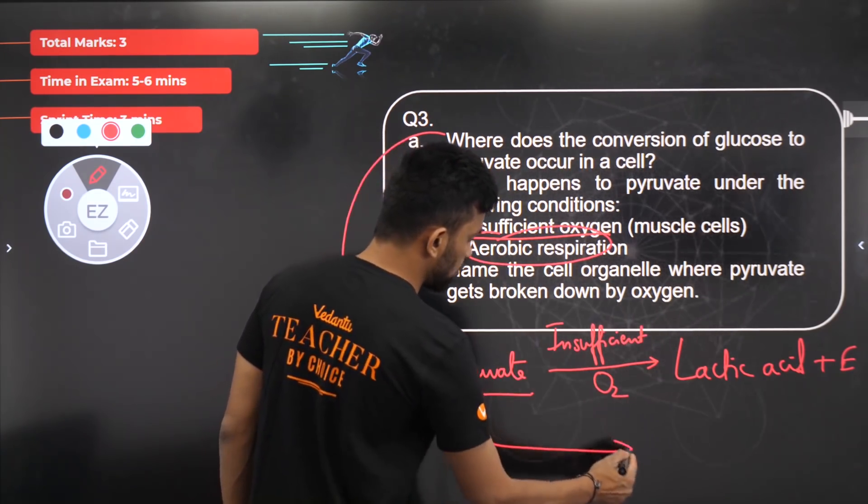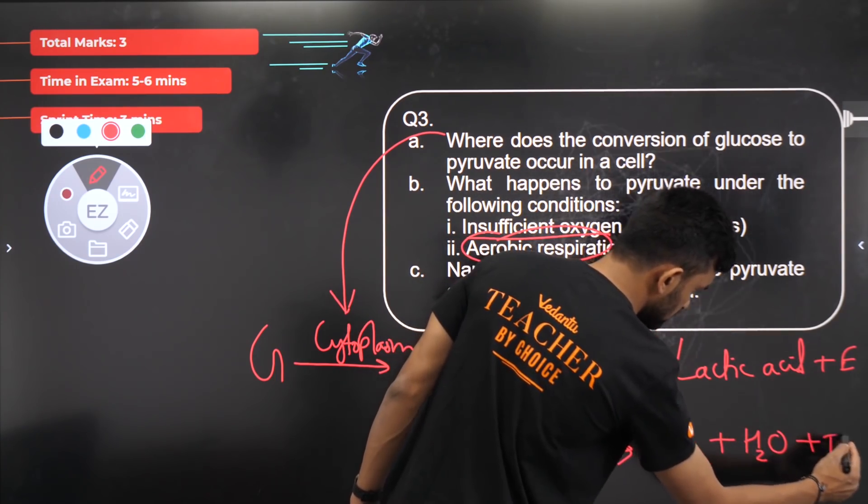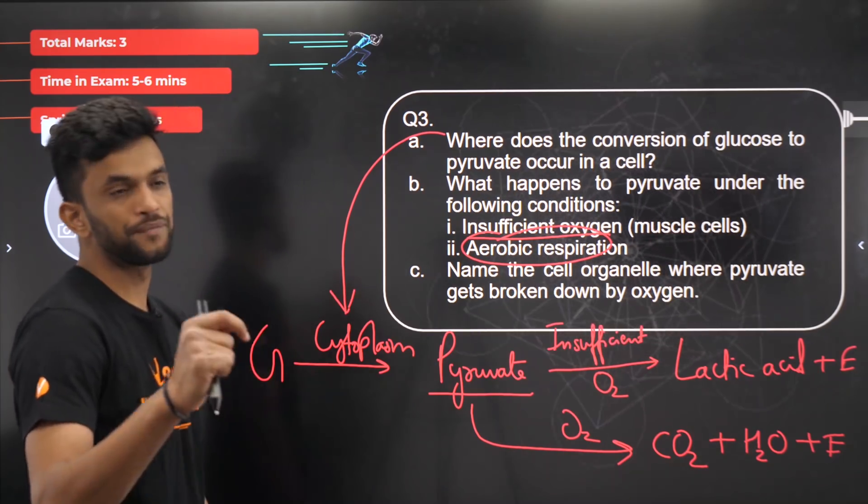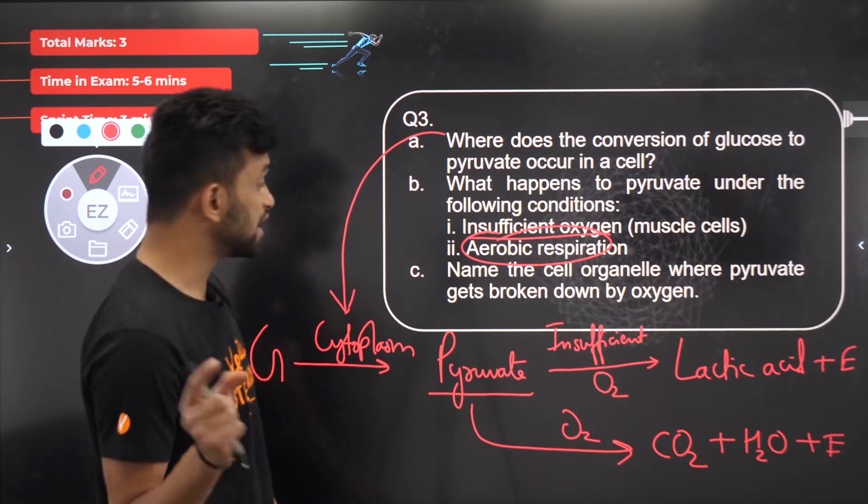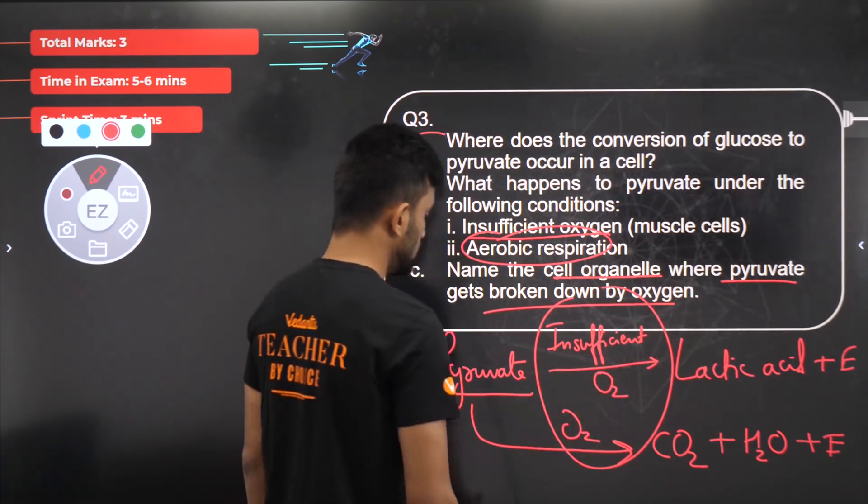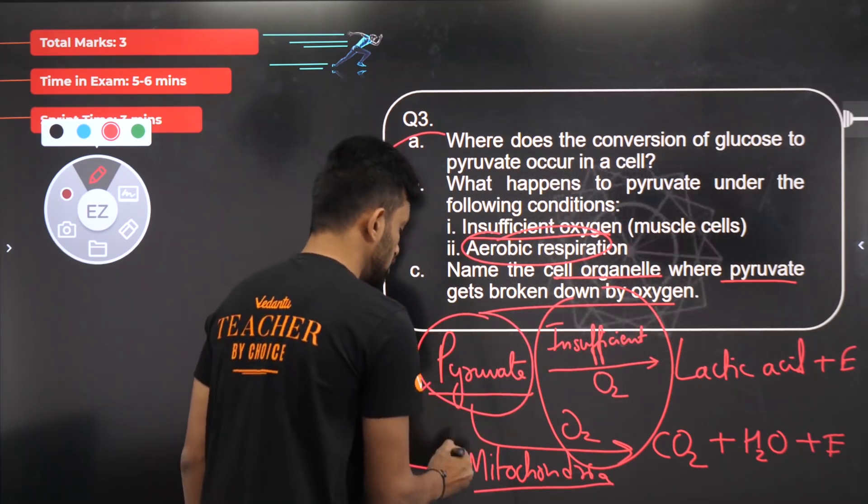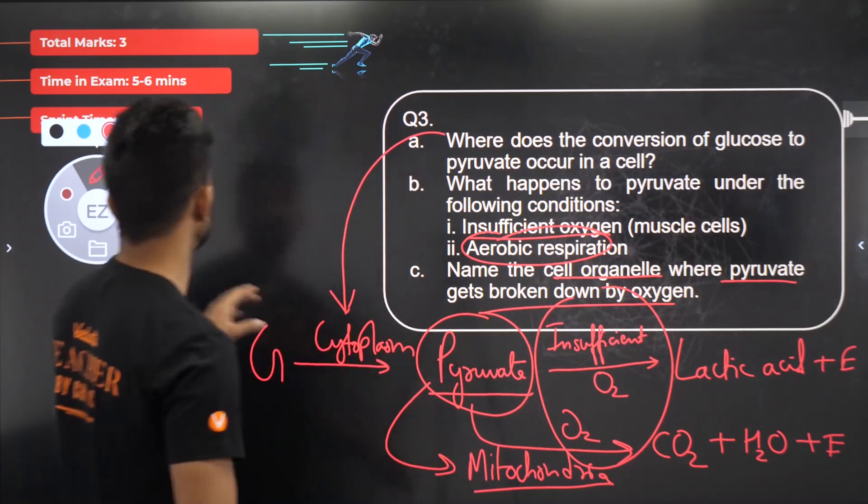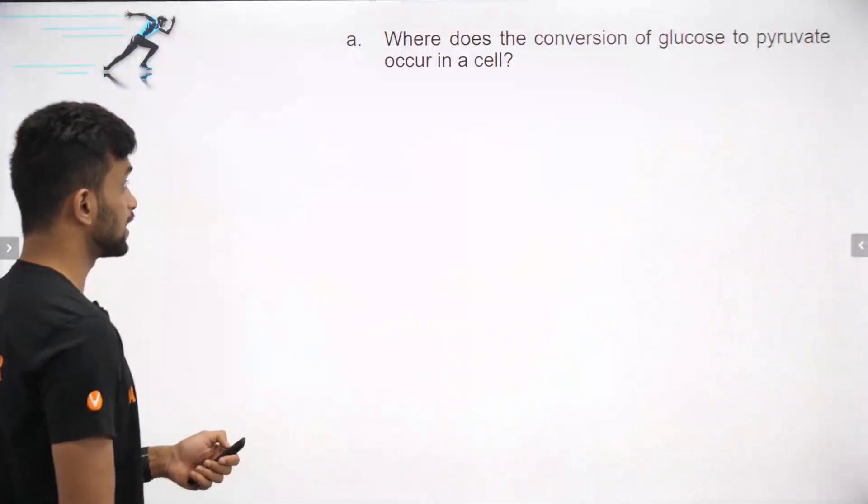In aerobic respiration, in the presence of oxygen, what is produced? CO2, water, and energy. The third case is fermentation. In the absence of oxygen in case of fungi, tell me in the comment box what is produced. The cell organelle where pyruvate is broken down with oxygen is the mitochondria. Pyruvate is further broken down in the mitochondria, which is also called as the powerhouse of the cell.